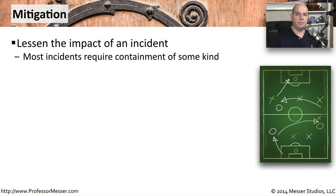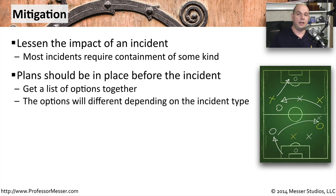The objective of an incident mitigation is to limit the scope of what the attack might do to your systems. If there's any damage or any widening of this incident, we may be able to contain it and limit it from going outside the scope of that containment. These mitigation options might be very different depending on what kind of attack it is. For instance, if they're attacking your internal email system, you may be able to mitigate that by removing the email system completely from your network.